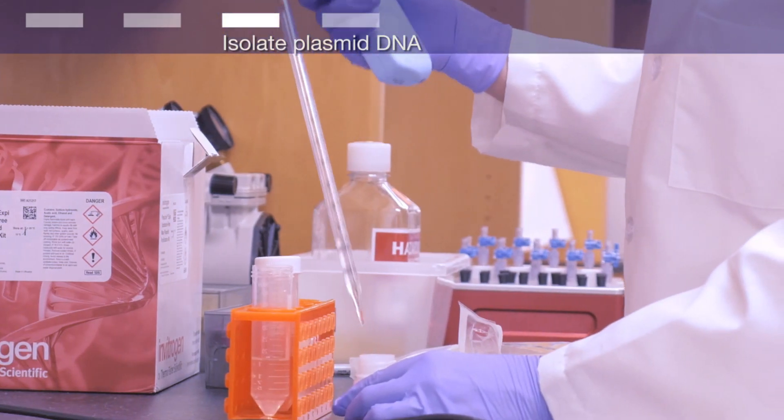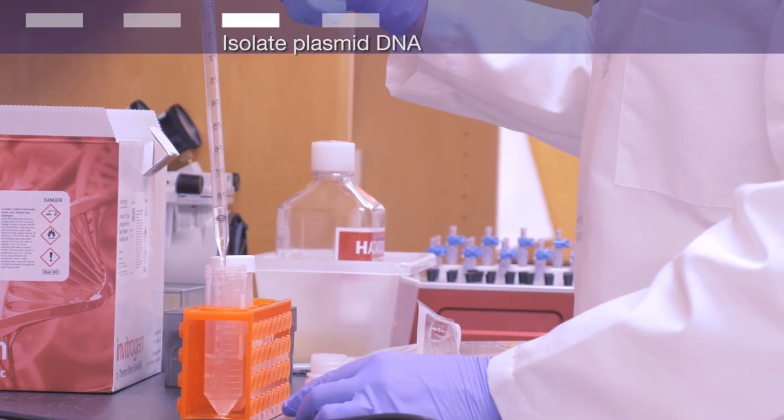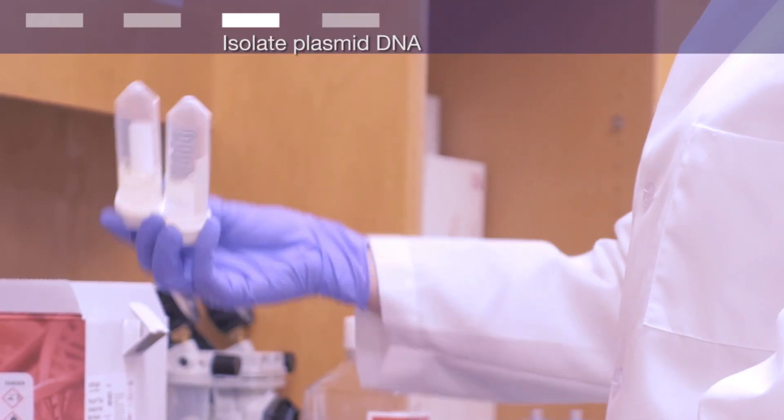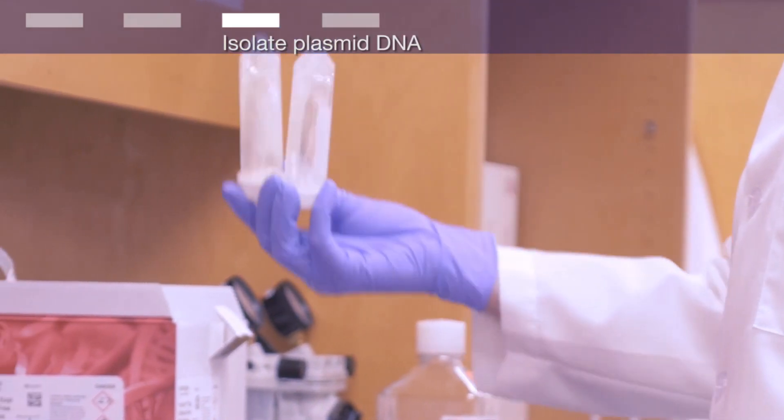Add 2.5 milliliters of endotoxin removal buffer to the clarified lysate and mix by inverting the 50 milliliter conical tube 10 times.